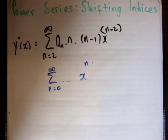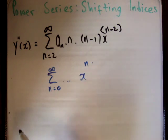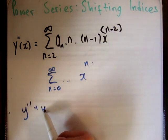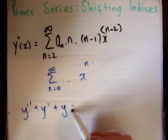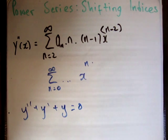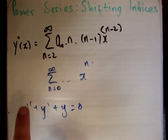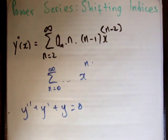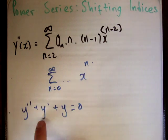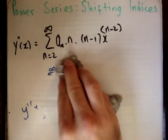So say if we have all the terms in an equation, we might have an equation like y double prime plus y prime plus y is equal to 0. And say we want everything to start at n is equal to 0 and have its power x to the n. And that means we have to change the form of our terms, maybe y double prime and y. So we have to shift the indices.